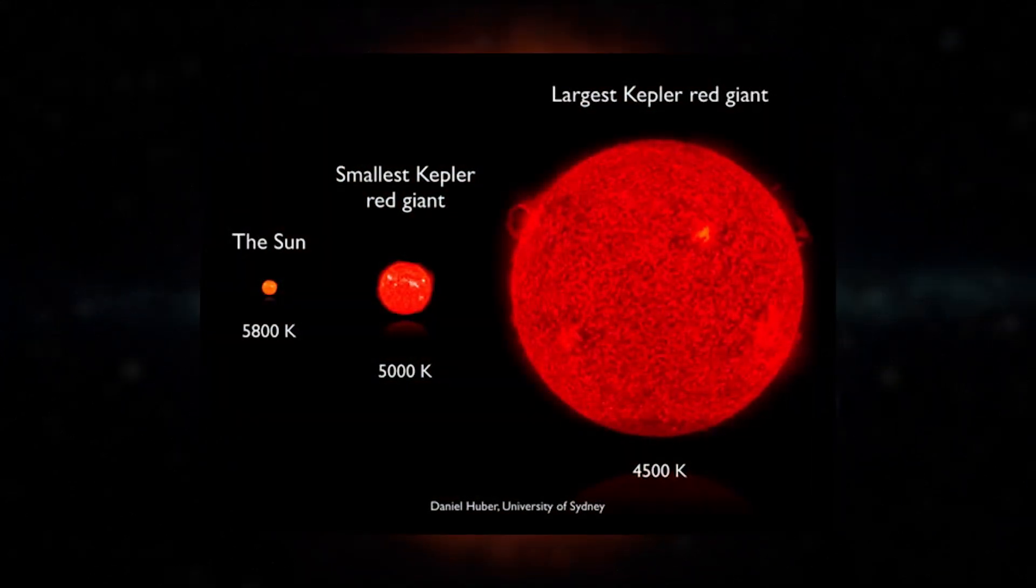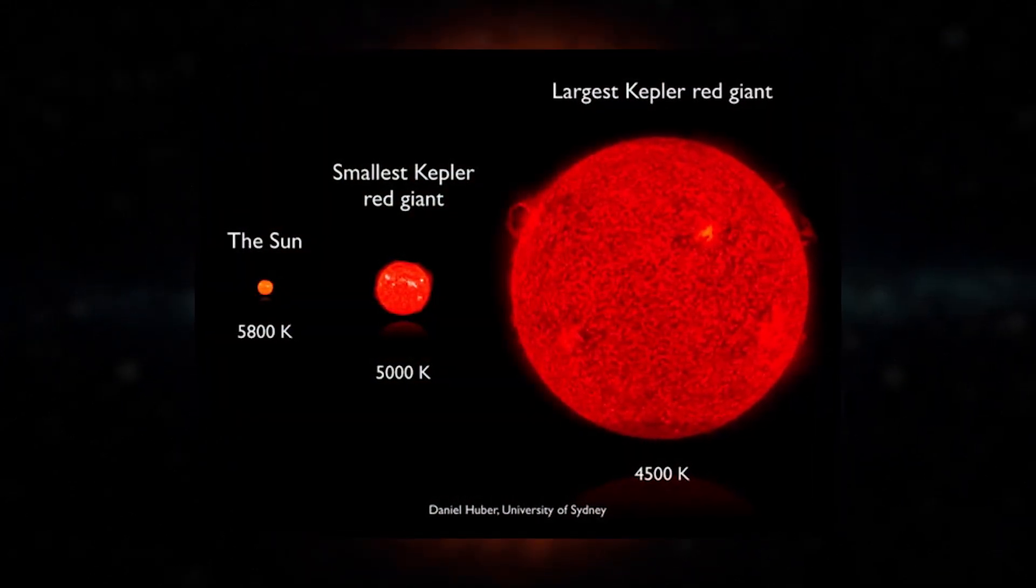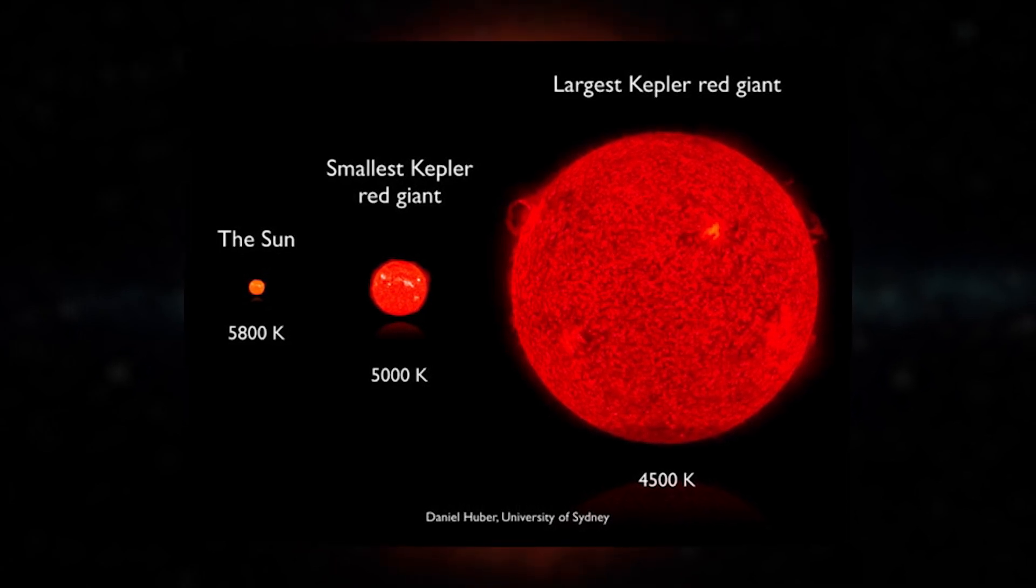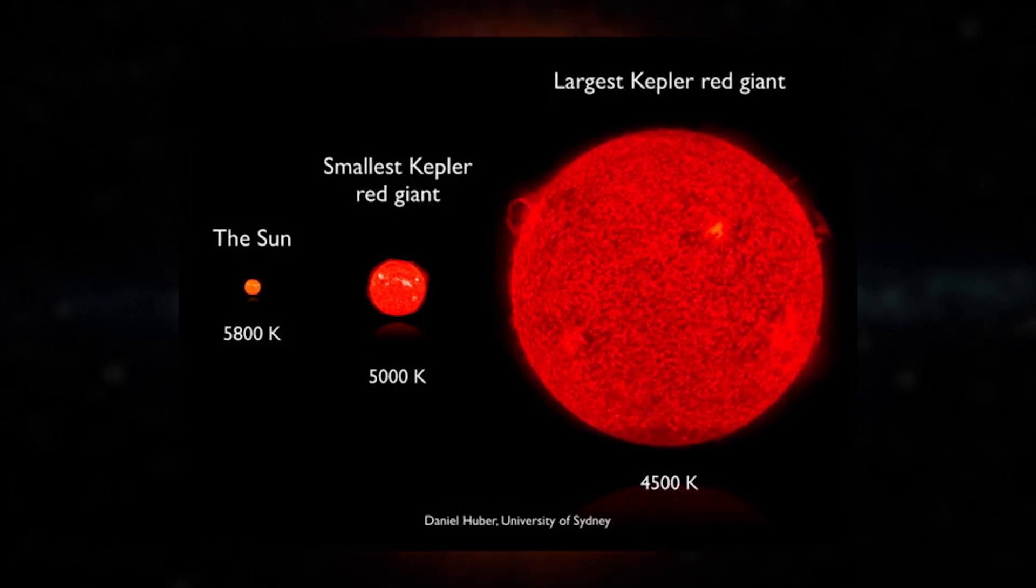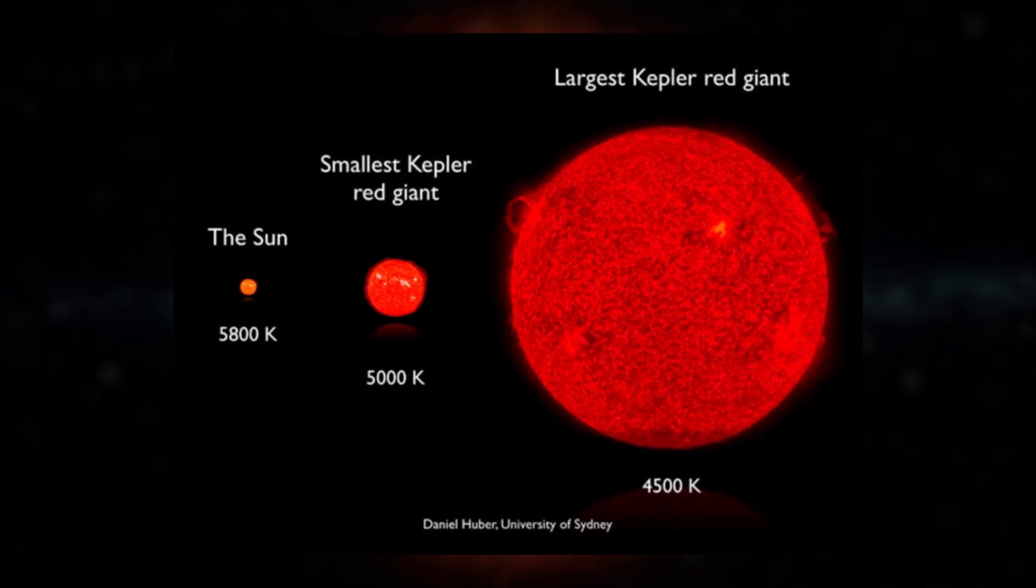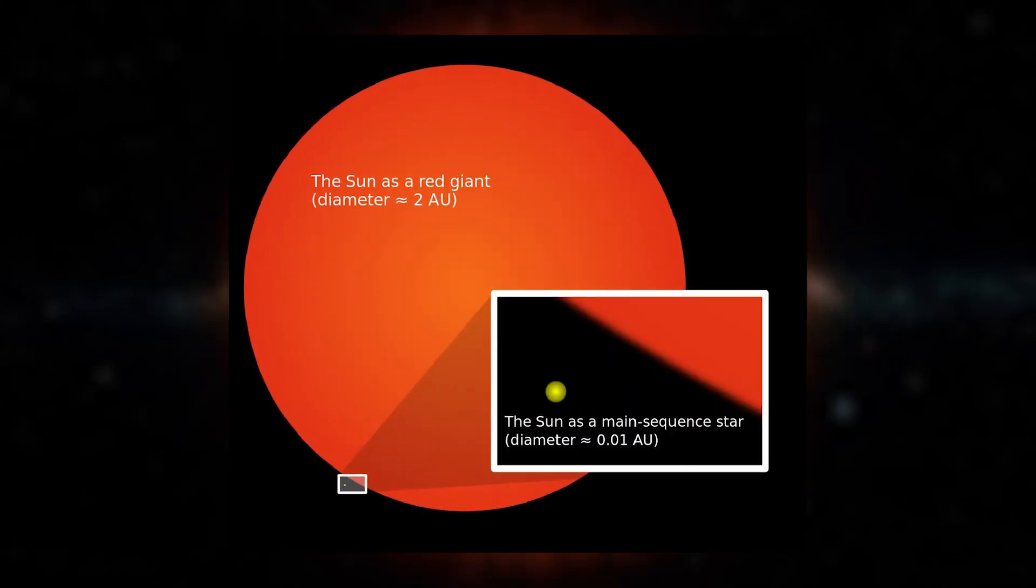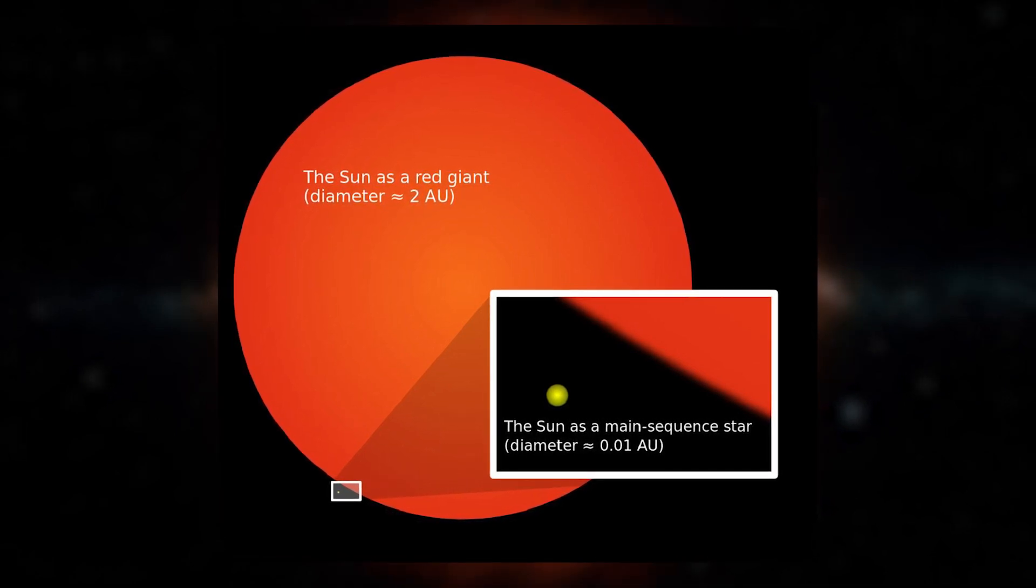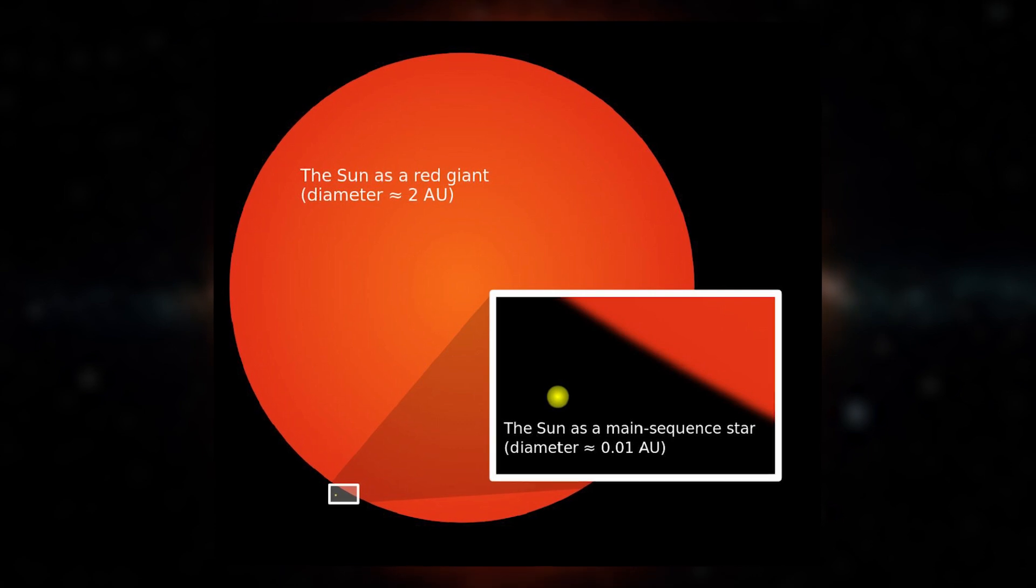Red giants are bigger, but not more massive than they were as main sequence stars. As stated, their increase in volume is due to the larger outwards pressure of a hotter core and surrounding layers. Our sun, for example, will have similar mass as a red giant compared to what it has today, but will be able to grow to more than 100 times its current size.